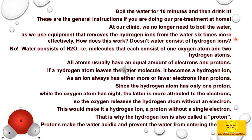How does this work? Doesn't water consist of hydrogen ions? No. Water consists of H2O molecules that each consist of one oxygen atom and two hydrogen atoms. All atoms usually have an equal amount of electrons and protons. If a hydrogen atom leaves the water molecule, it becomes a hydrogen ion, as an ion always has either more or fewer electrons than protons.